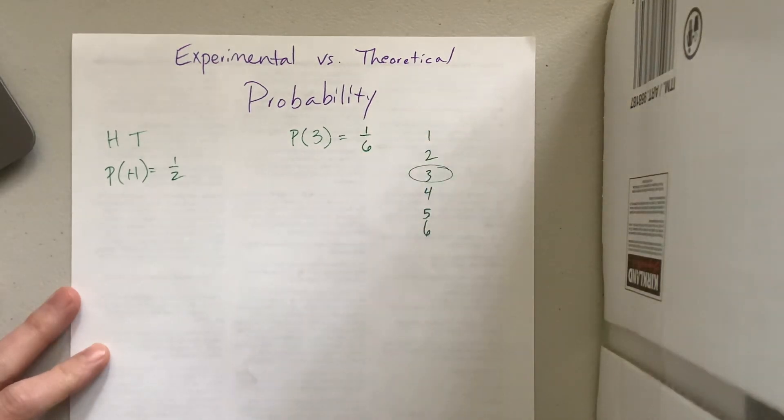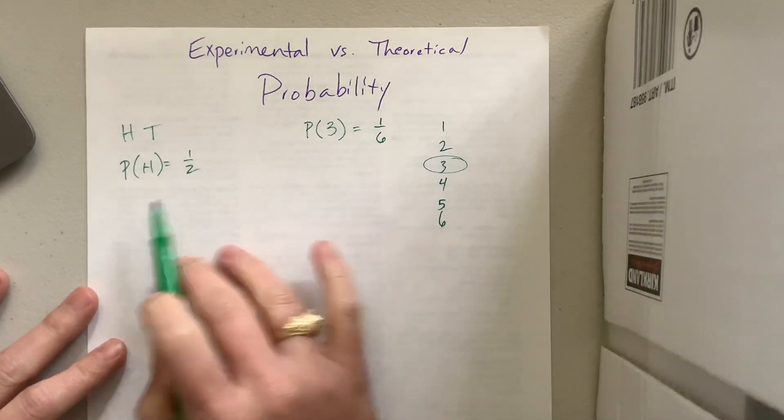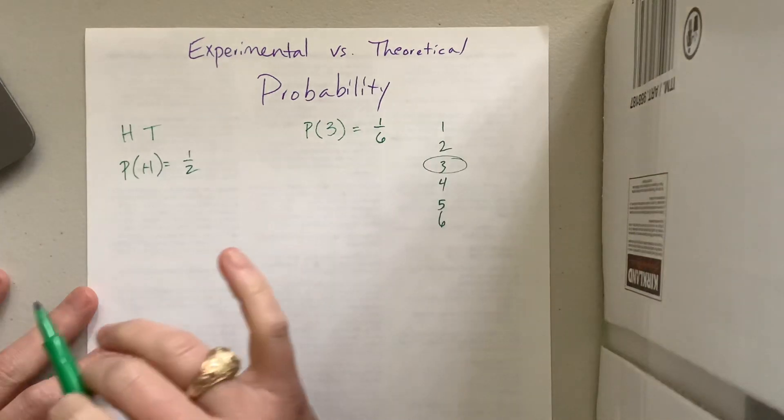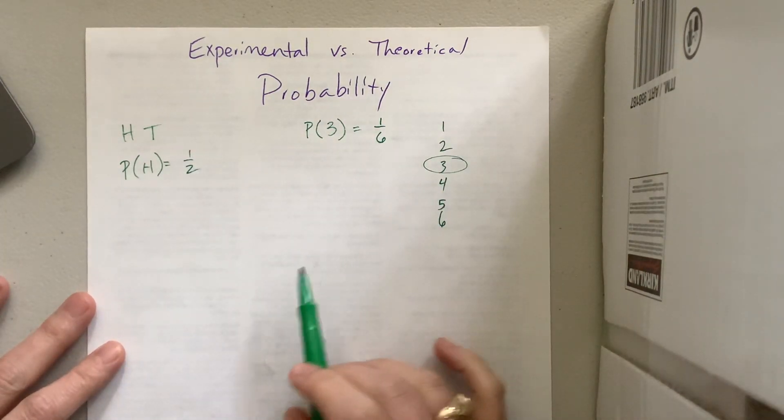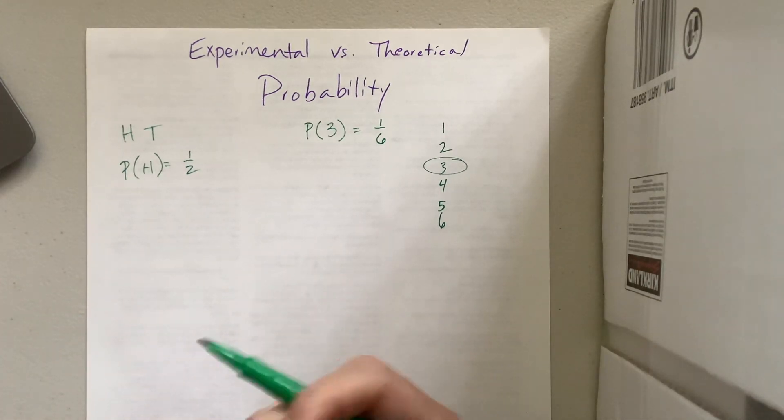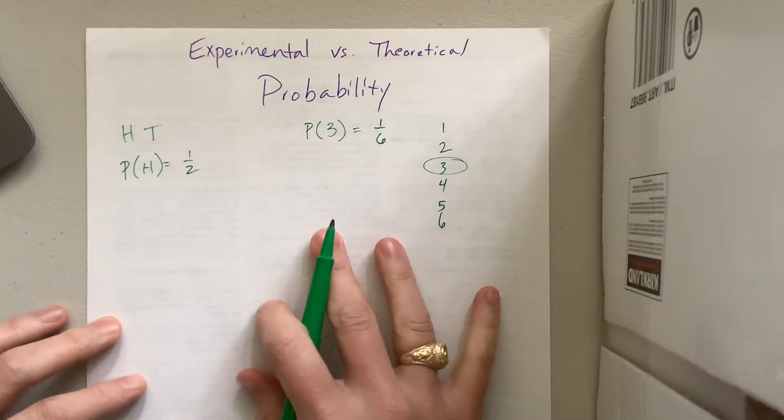So the probability of rolling a three, and notice that notation of how we're going to do that, the probability of something is equal to, well, there's one out of these six options. Both of those were examples of theoretical probability because we can figure out all the possible things that could happen and then figure out what we're looking for out of those possible things.